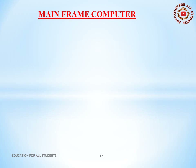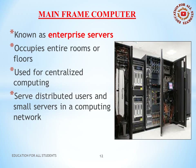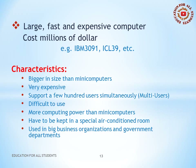Mainframe computers, known as enterprise servers, occupy entire rooms or floors. They are used for centralized computing, serving distributed users and small servers in a computing network. They are large, fast, and expensive — costing millions of dollars. Examples include IBM 3091 and ICL 39. Characteristics: bigger than minicomputers, very expensive, support a few hundred users simultaneously, multi-user, difficult to use, more computing power than minicomputers, and must be kept in a special air-conditioned room. Used in big business organizations and government departments.